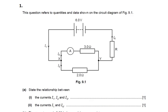We know that conventional current flows from the positive terminal to the negative terminal of the battery. So the current is flowing in this direction. As current i1 reaches junction X, it splits into two branches — i2 passes through one branch and i3 passes through the other branch.